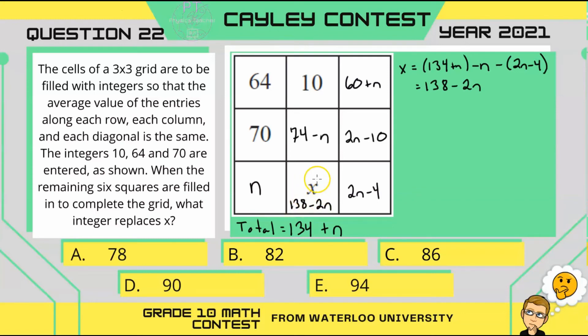So, before we can actually solve for x, we need to solve for n. So, let's look at this third column. We know that all of these cells will add to 134 plus n. That gives us an equation with n that we can solve for.